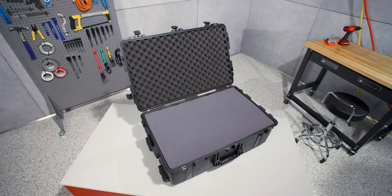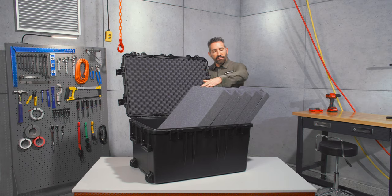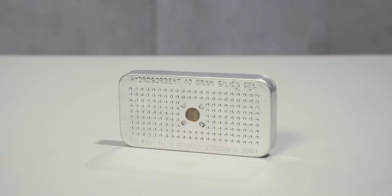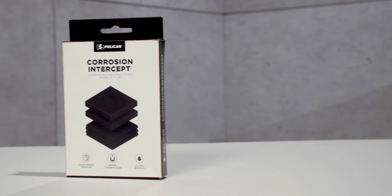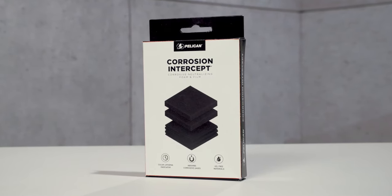The case is available with or without foam. The foam set includes the base foam, convoluted lid foam, and four layers of pick and pluck foam. Available accessories include our TSA locks and desiccant gel to absorb humidity inside the case, and our new corrosion intercept material that stops rust before it can start.